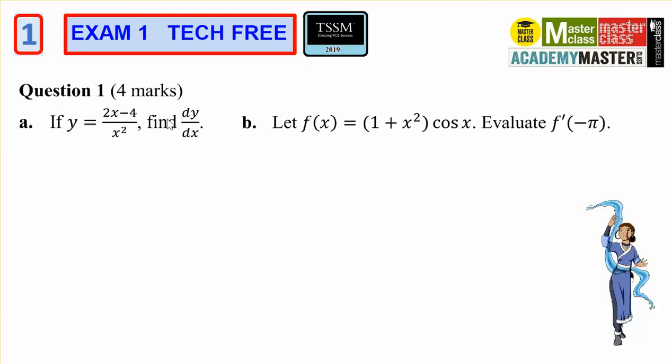This is for Year 12 master class exam prep question 1b. So I've got a product rule because I've got an x there and an x there. I need to evaluate the derivative at x equals negative pi.